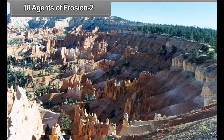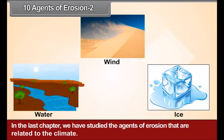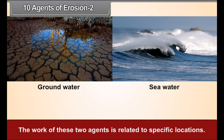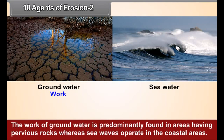Chapter 10: Agents of Erosion, Part 2. In the last chapter, we studied the agents of erosion related to climate. In this chapter, we shall study groundwater and sea waves as agents of erosion. The work of these two agents is related to specific locations. The work of groundwater is predominantly found in areas having pervious rocks, whereas sea waves operate in the coastal areas.